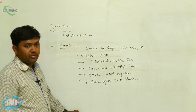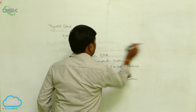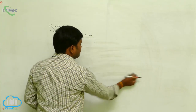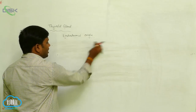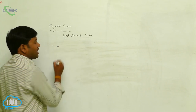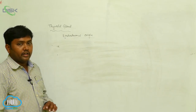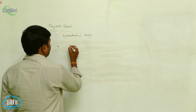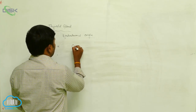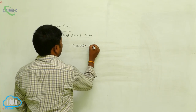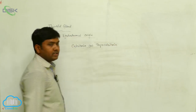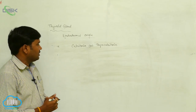The parafollicular cells of the thyroid gland release a hormone called calcitonin, also known as thyrocalcitonin. This hormone is secreted by the parafollicular cells of the thyroid gland.